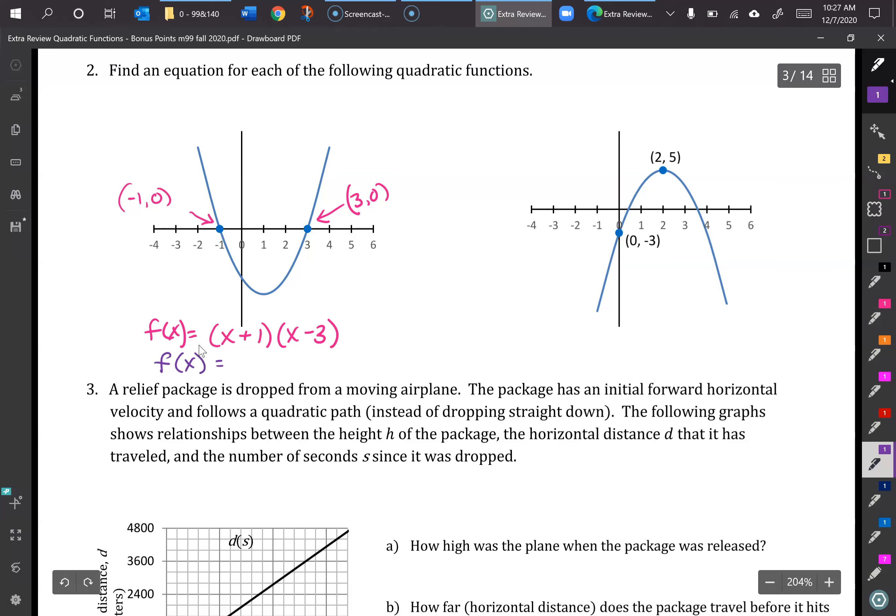So here we could just FOIL this out: x squared plus 1x minus 3x would be minus 2x and then minus 3. So this would be in standard form, or general, not vertex. And this right here is an okay form, the first one, the factored form. It would be okay to leave it like that, but we're used to seeing it more like this one.